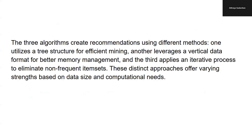Each of the three algorithms brings a unique approach to generating recommendations optimized for different scenarios. One method employs tree structures to mine frequent item sets efficiently, significantly speeding up the process. Another uses a vertical data format for more memory-efficient processing, suited for large datasets. The third adopts an iterative process that systematically filters out non-frequent item sets, offering scalability. These distinct methods ensure flexibility in the recommendation generation process based on data size and computational resources available.